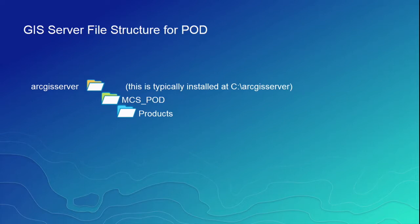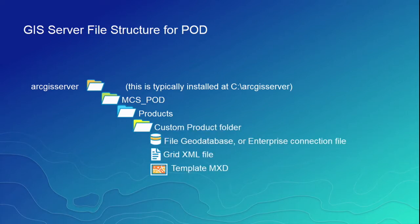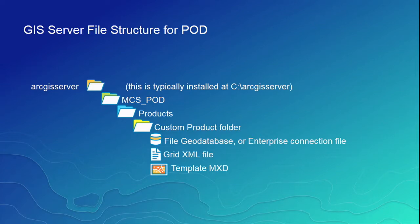The next one is your products directory. Inside your products directory is where the magic happens in the POD application. This is where your enterprise geodatabase connection files are, your grid XMLs, your map templates. This is quite literally what you need to get up and running with the POD application. We already deliver all of the configuration files. You copy them over to your web server, set up your web server's name inside the configuration file, put your data here, and you are up and running to automate the map process.